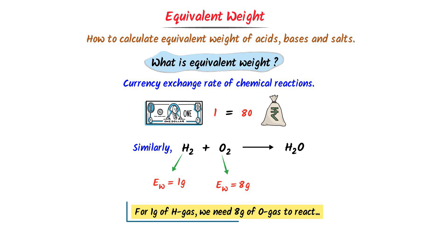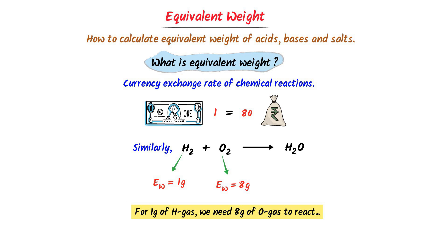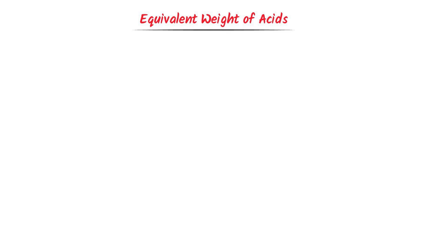For 1 gram of hydrogen gas, you need 8 gram of oxygen gas. In other words, 1 gram of hydrogen gas will react with 8 gram of oxygen gas to form H2O. Thus, remember that equivalent weight teaches us how many grams of one reactant will combine with grams of another reactant to form a product. Hence, note down this important concept. Now we will learn equivalent weight of acids.